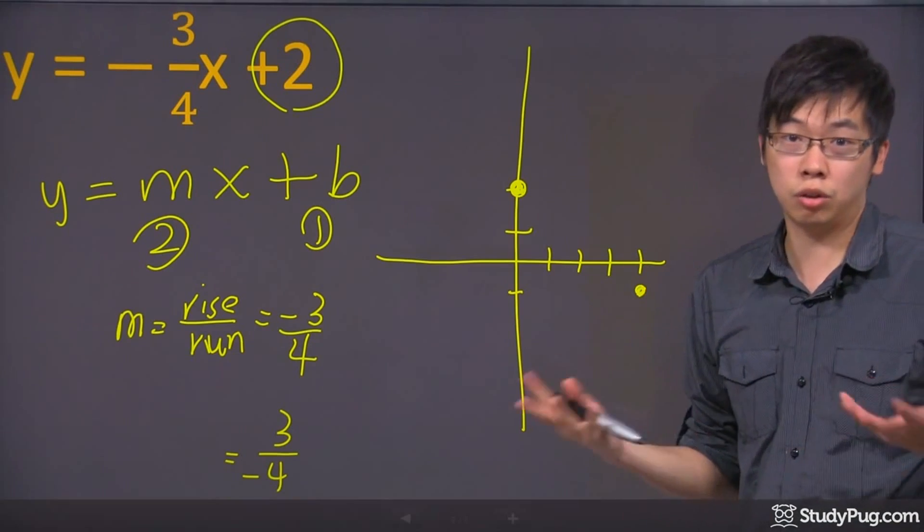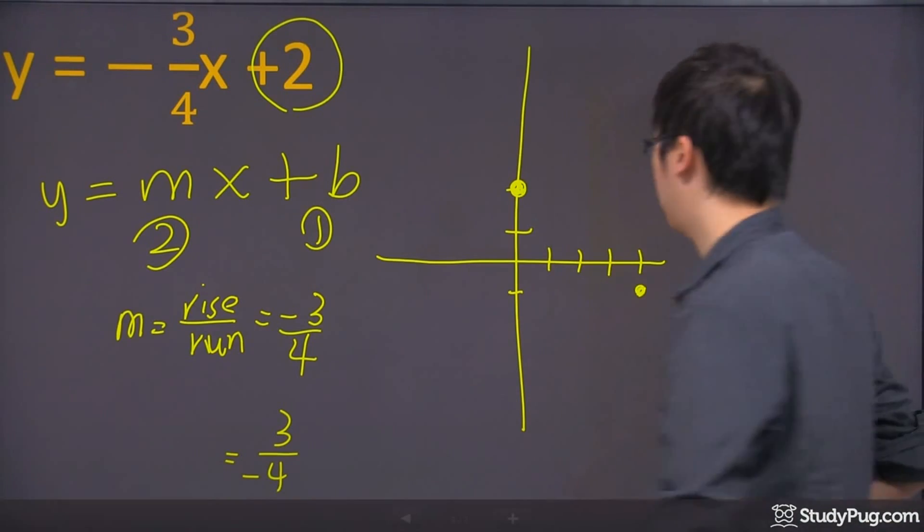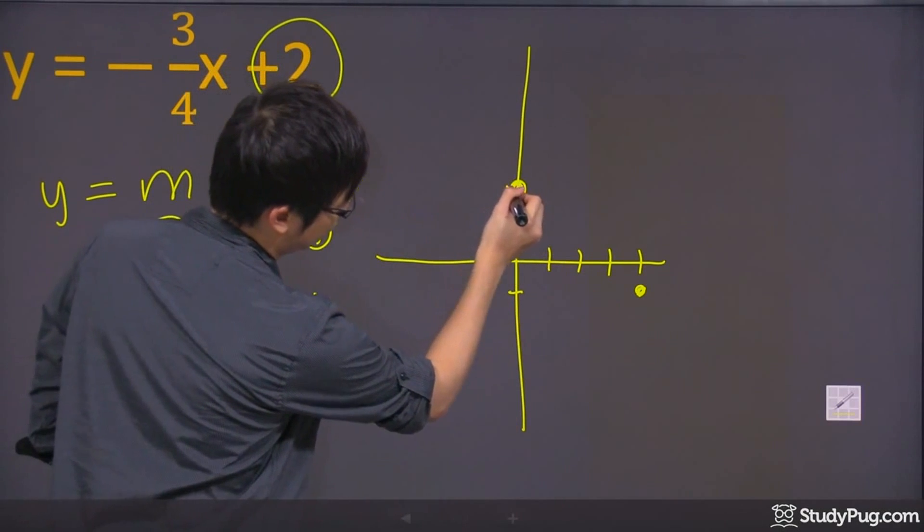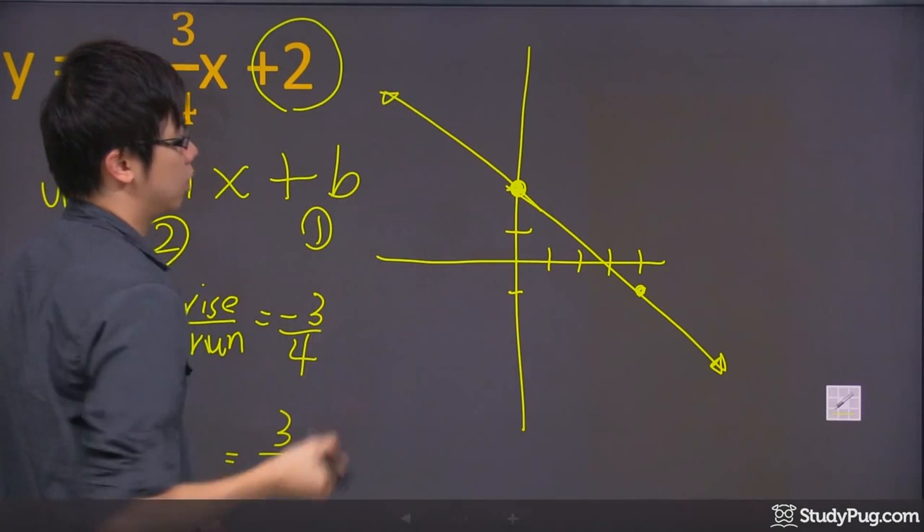Now once you have the two points, this is actually good enough. You just grab your ruler, and you just connect the lines together, so it looks like I'm going to go down this way, put an arrow right there, and then come back up this way, and put an arrow right there.